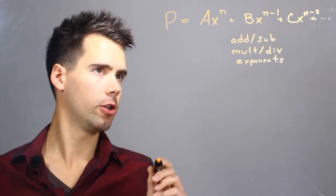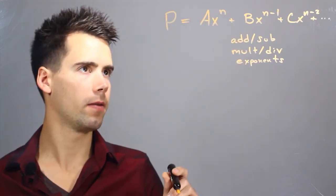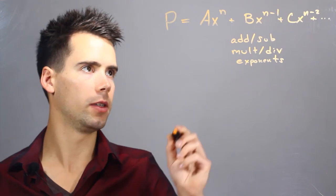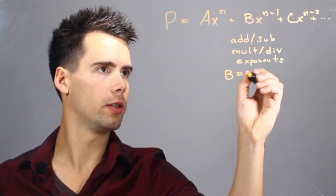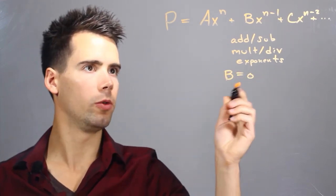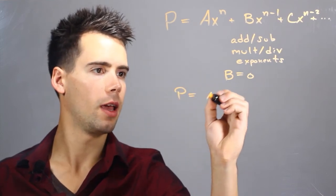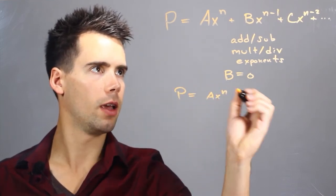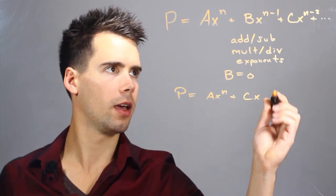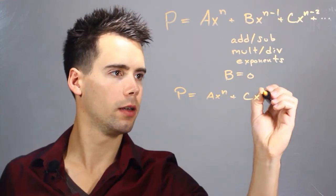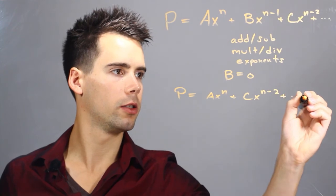One thing you should note is that these constants do not have to have a value greater than 0 — it could be 0. If b, for instance, was equal to 0, then we would lose that term and our polynomial would be ax to the n plus cx to the n minus 2, and so on and so forth.